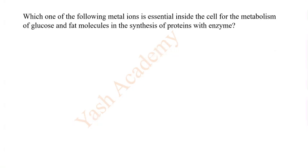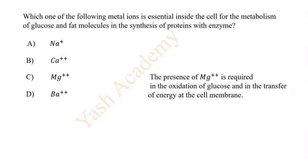Which one of the following metal ions is essential inside the cell for the metabolism of glucose and fat molecules in the synthesis of proteins with enzyme? Options: A Na⁺, B Ca²⁺, C Mg²⁺, D Ba²⁺. So correct answer is C: Mg²⁺.